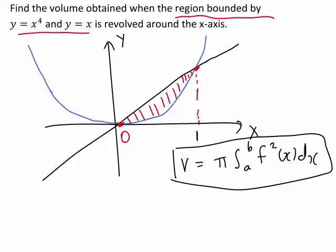We want to find the volume when this region is revolved around the x-axis, but our formula applies to a region bounded by one function of x and the x-axis between lines x equals a and b. So how can we use this formula when our region is bounded by two curves, neither of which is the x-axis? We can consider first the region bounded by y equals x to the 4, the x-axis, and the lines x equals 0 and x equals 1 — we could work that out using the formula. Similarly, we could work out the region bounded by y equals x, the x-axis, and x equals 0 and x equals 1. Since y equals x is the upper curve, that region would be larger.